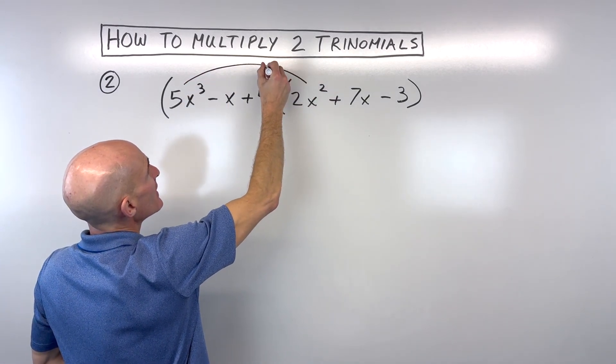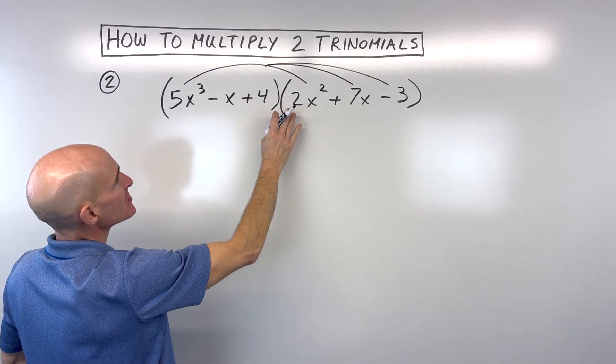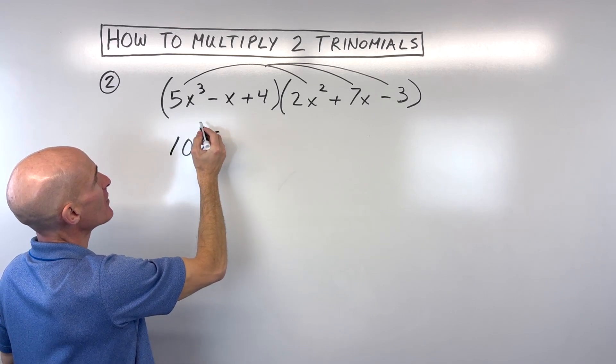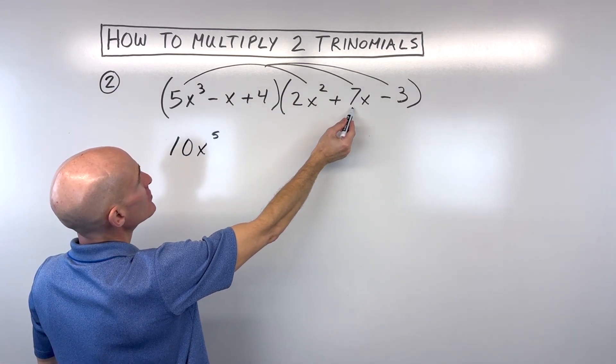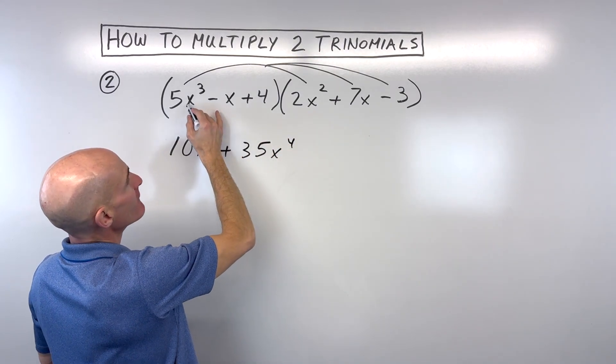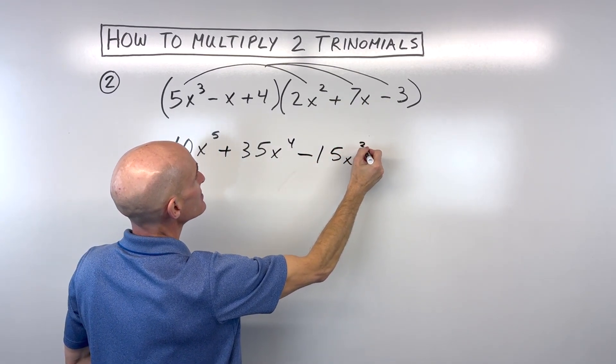We've got 5x cubed. We're going to distribute that to all three of these terms on the second trinomial. So 5x cubed times 2x squared gives us 10x to the 5th. Remember, when you multiply, you add the exponents. Then we have 5x cubed times 7x, which gives us 35x to the 4th. 5x cubed times negative 3 is negative 15x cubed.